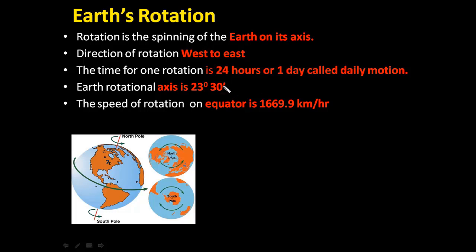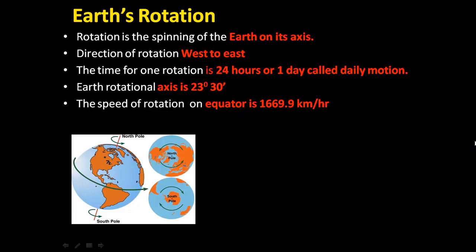Earth's rotation axis is always inclined 23 degrees 30 minutes. The speed of rotation at the equator is 1669.9 km per hour. We will learn this in detail in the next session. Now we will watch a video clip to understand the Earth's rotation.